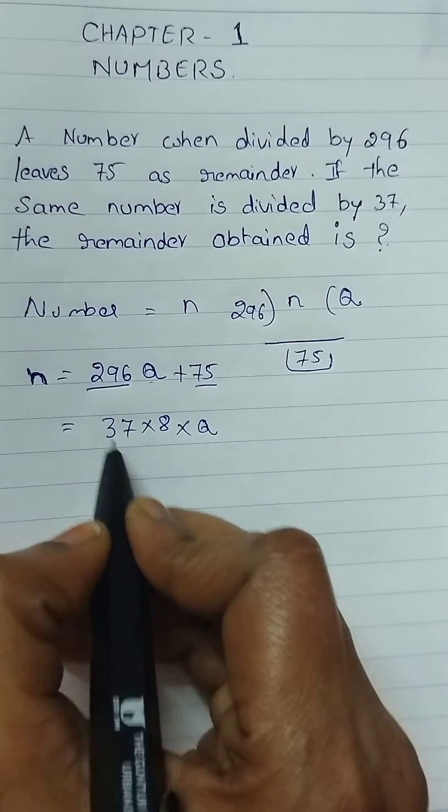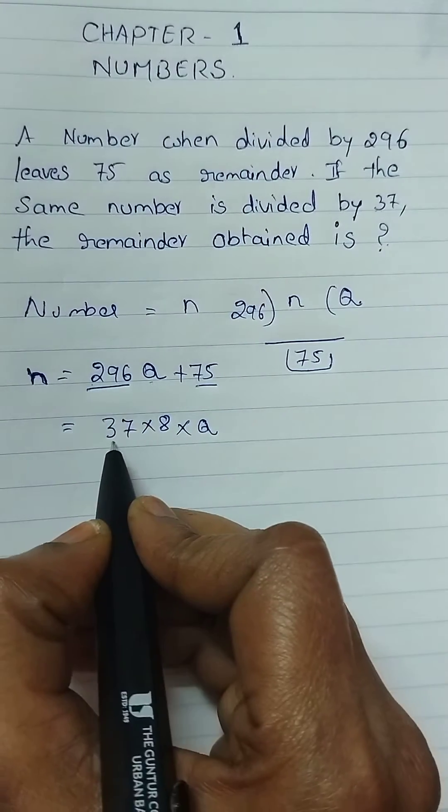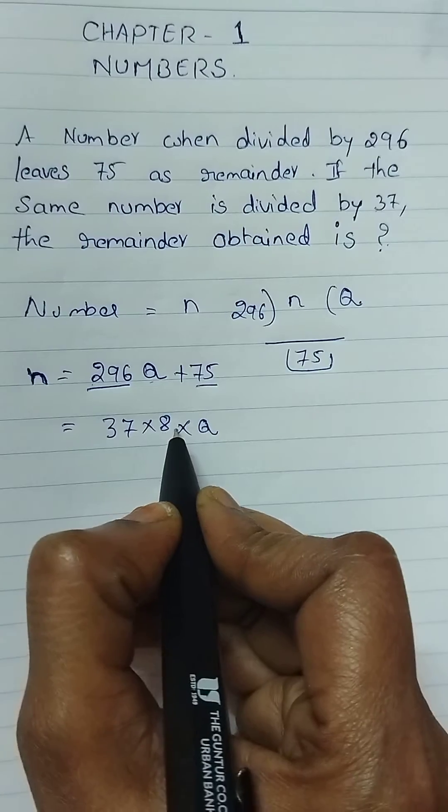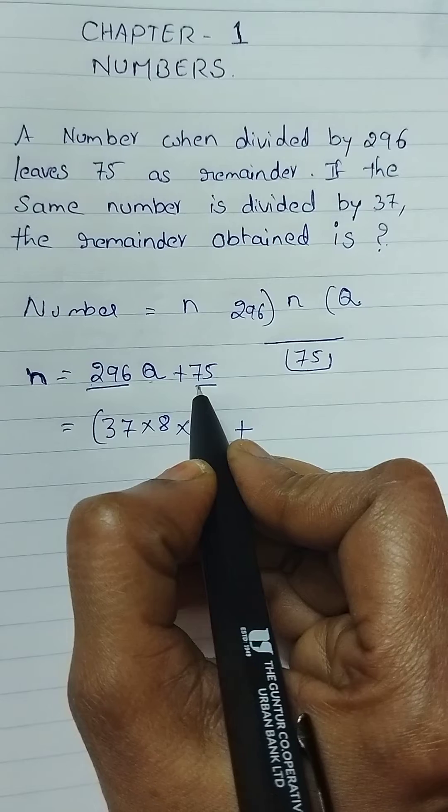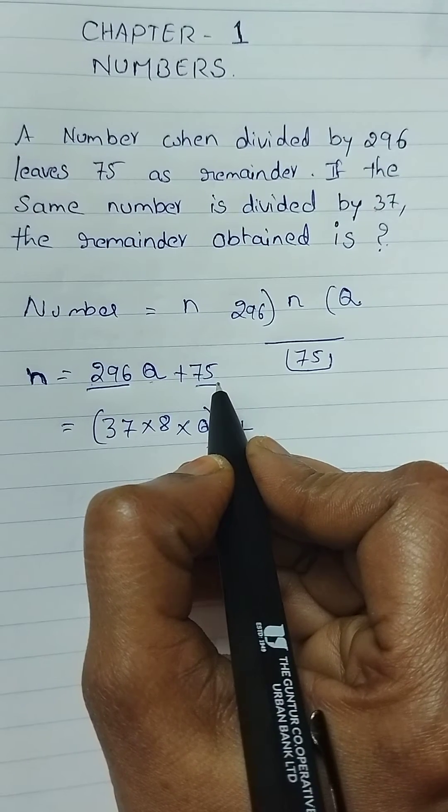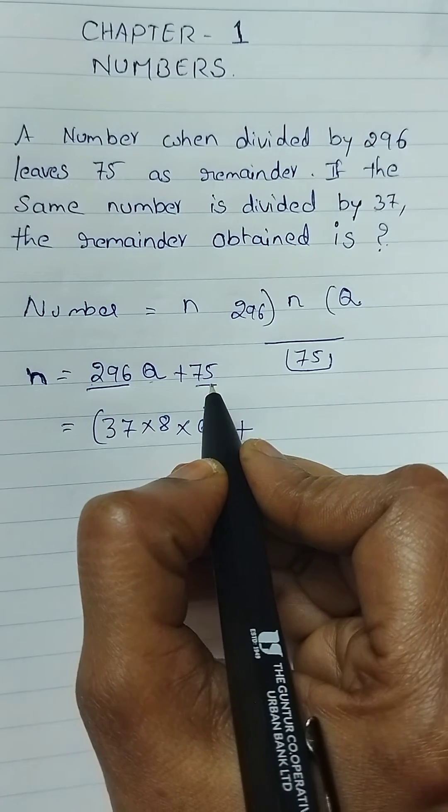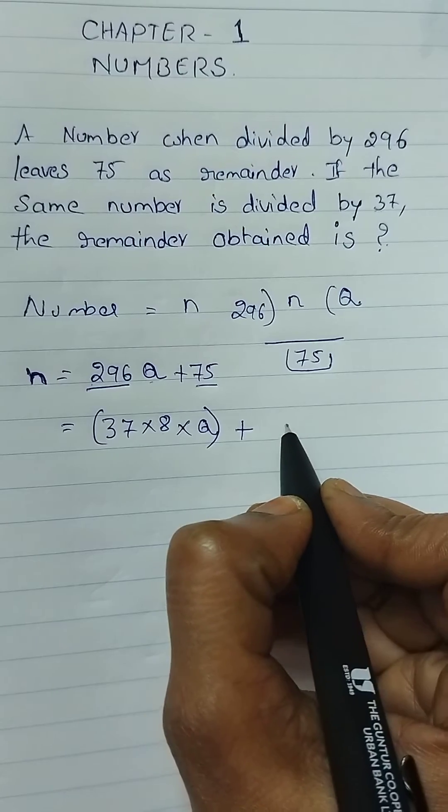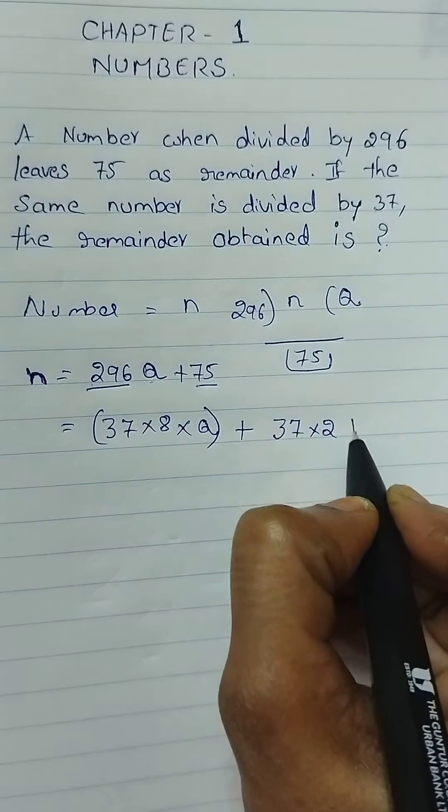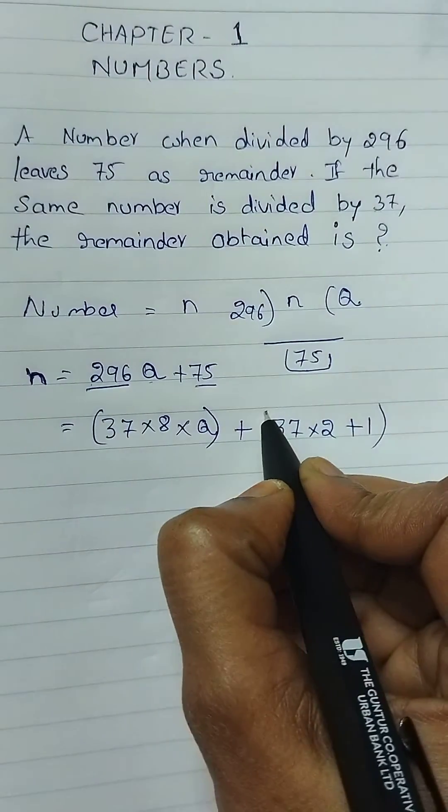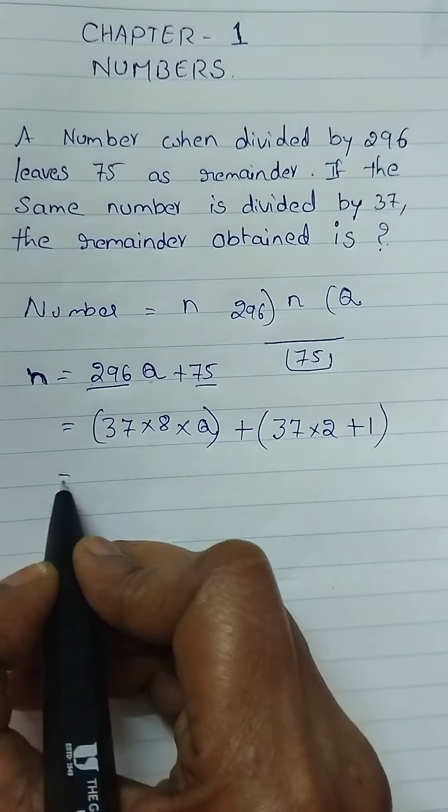So 296 can be written as 37 into 8. So we write it as 37 into 8 into q. Here the 296 is written as 37 into 8q. We have written q as it is.